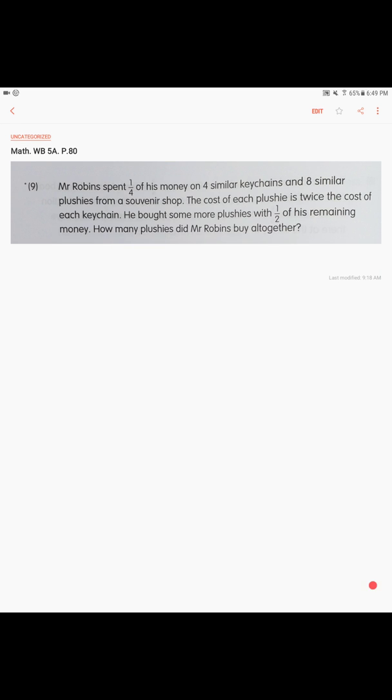Okay, page 80, problem 9. Mr. Robbins spent one-fourth of his money on four similar keychains and eight similar plushies from a souvenir shop. The cost of each plushie is twice the cost of each keychain. He bought some more plushies with half of his remaining money. How many plushies did Mr. Robbins buy altogether? A plushie is basically just a soft toy.